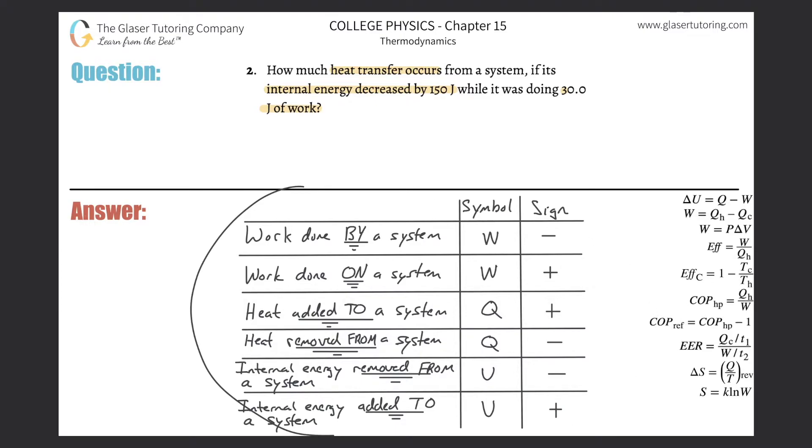I'll talk about it in a second. We have to know the signs that are associated with certain terms or certain heat or energy transfers by or on a system. So if you know work is being done by a system, meaning that system is doing work on something else, then the sign of the work in our formula over here for internal energy will be negative. The system is essentially losing energy because it's doing work on some other object. That should hopefully make sense.